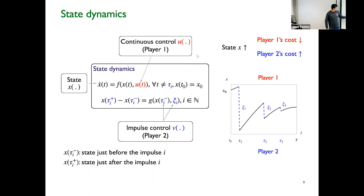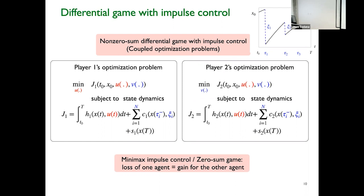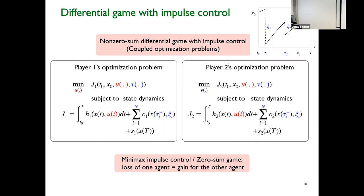We can define the optimization problem of each player. Player 1 chooses control u to minimize cost J1; player 2 uses impulse control v to minimize cost J2. The continuous control u of player 1 enters the objective function of player 2, and the impulse control of player 2 enters the objective function of player 1. The state dynamics are controlled by both players, giving two coupled optimization problems — a non-zero-sum differential game with impulse control. A special case is a minimax impulse control or zero-sum game where loss of one agent equals gain of another, but we are mostly concerned with non-zero-sum games.